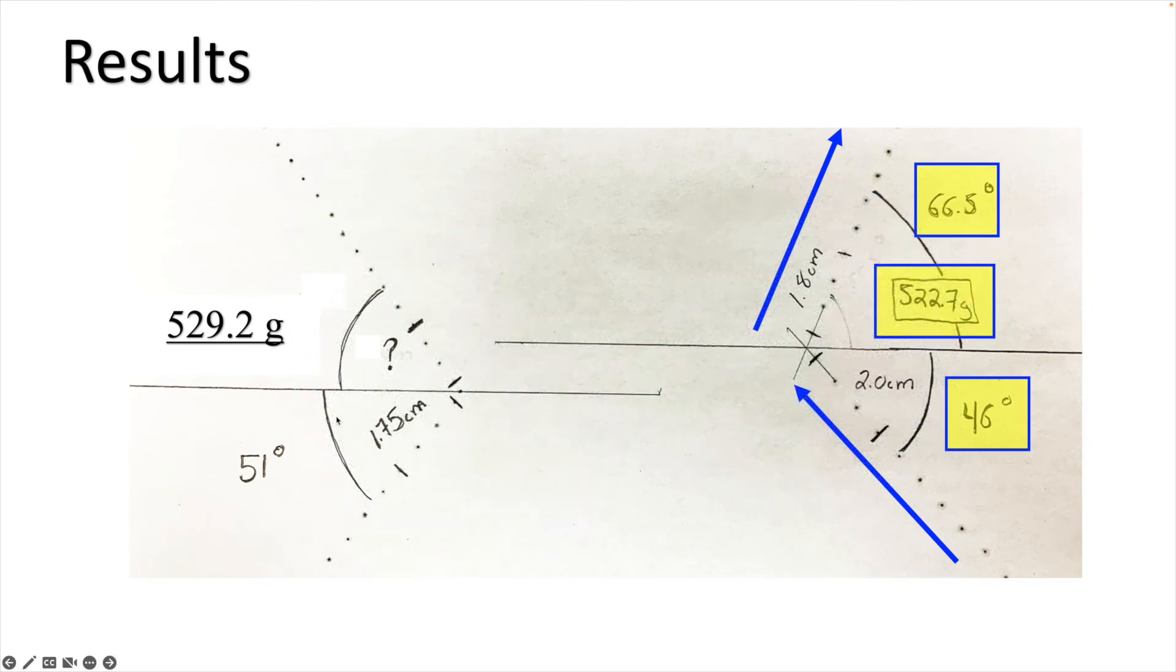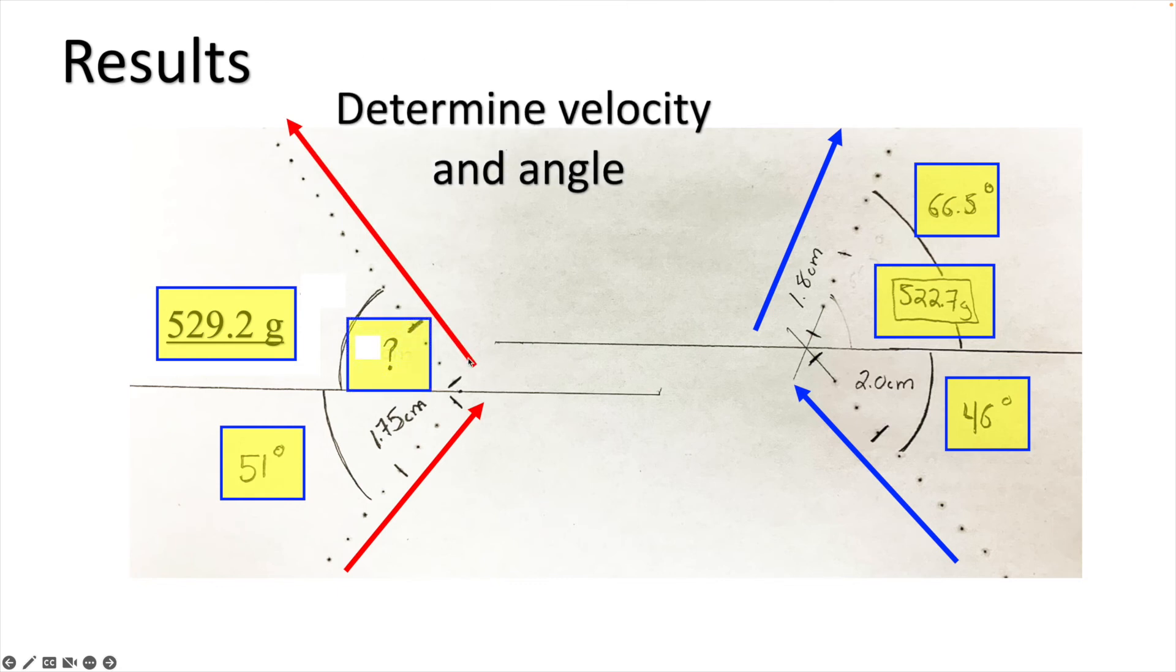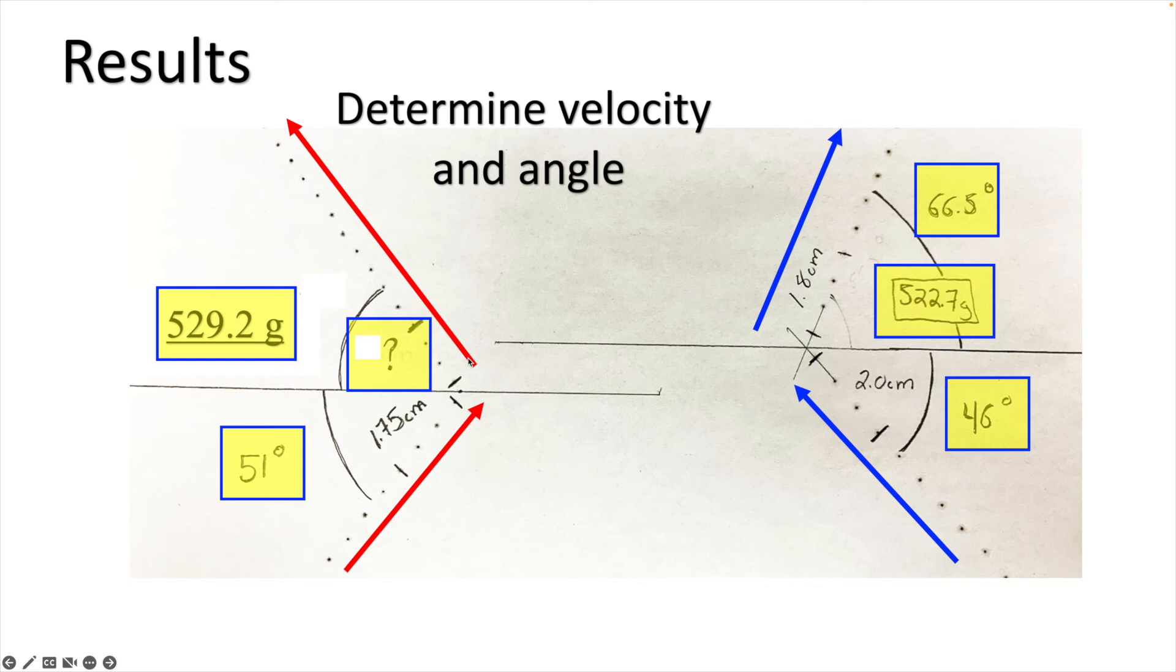To look at the other puck, the 529.2 gram puck, it came in at 51 degrees and what we're trying to solve for the first part of this lab is when it leaves the collision, what is the angle and what is the velocity? That's going to be the first question in the lab and probably the biggest focus of it as it's going to require the most work.